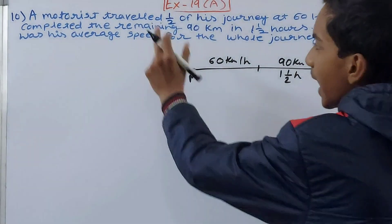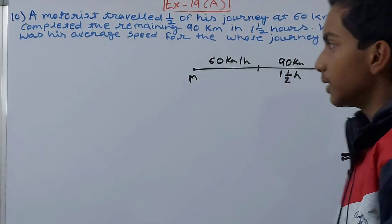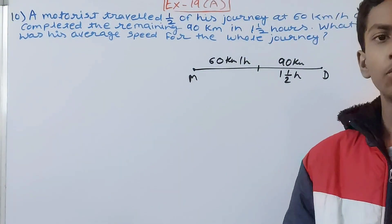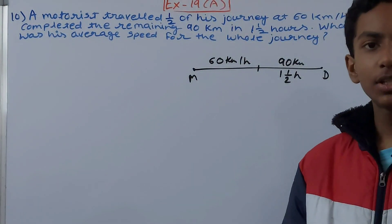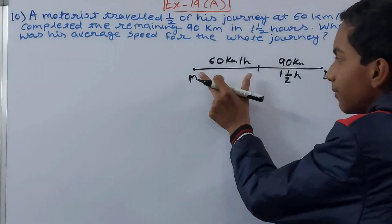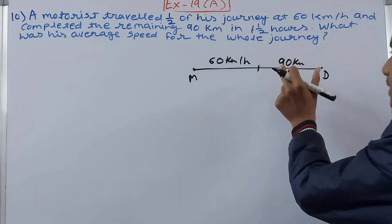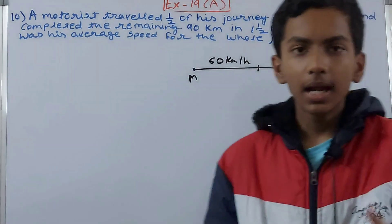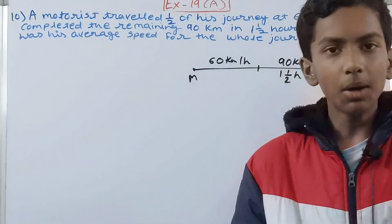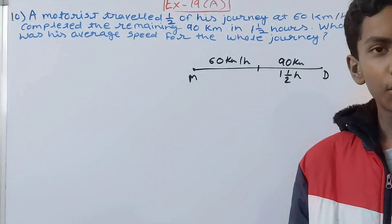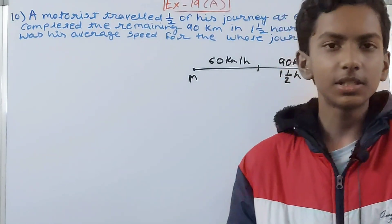What are we being asked? We are being asked what was his average speed for the whole journey. Average speed means the speed in the first half and the speed in the second half combined, divided by the number of speeds.